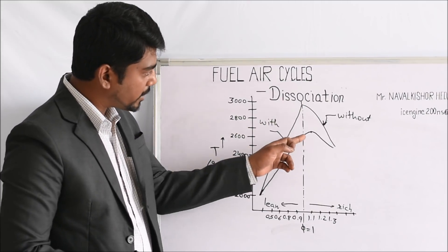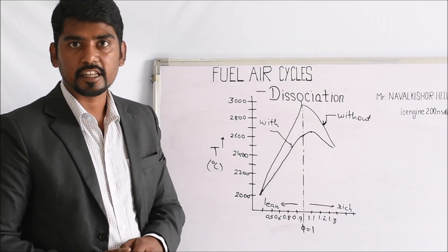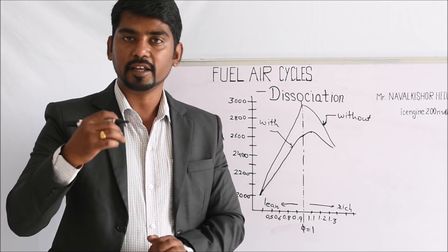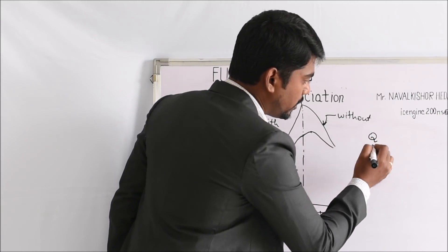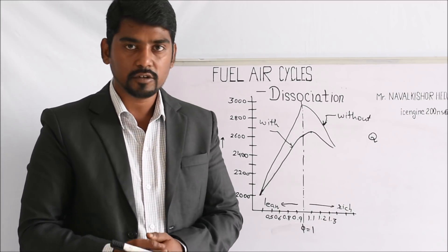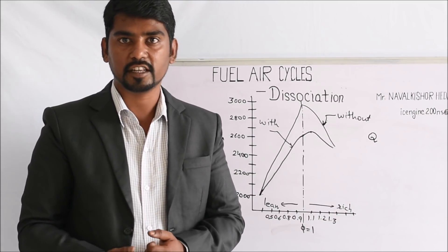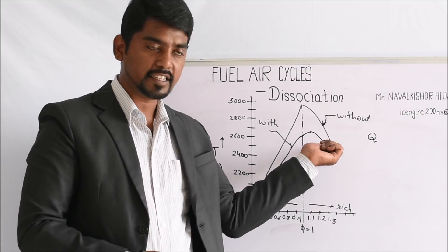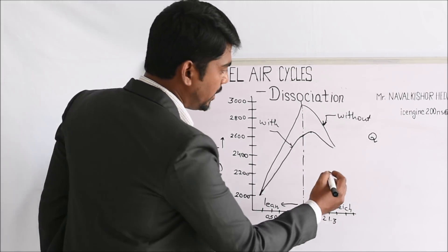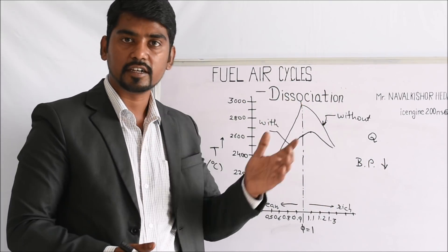We can observe the temperature variation without dissociation and with dissociation. This temperature is the temperature after the combustion process, or temperature during the expansion process. Temperature directly relates to the heat available, and the sensible energy of this heat drives the work done during the expansion stroke, forcing the piston down with pressure forces. If the temperature is less, the heat available is less; if this heat is less, the work done on the piston is less, thereby directly reducing brake power with the process of dissociation.